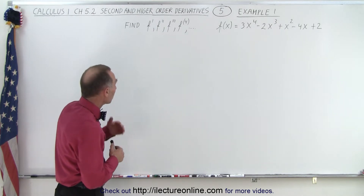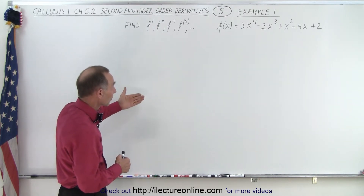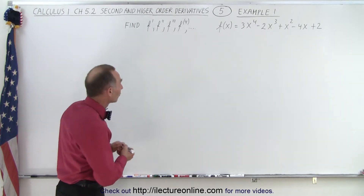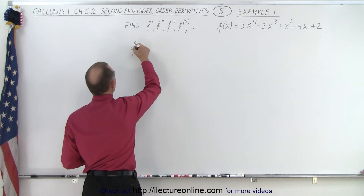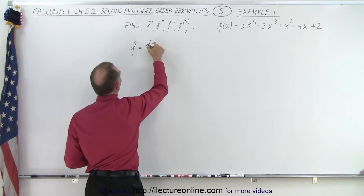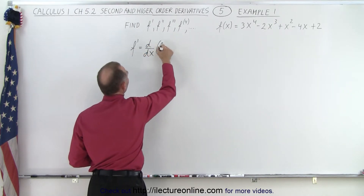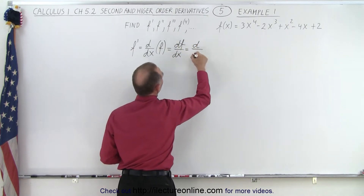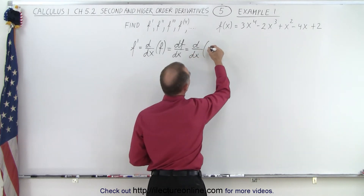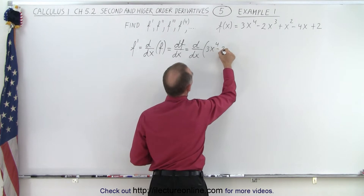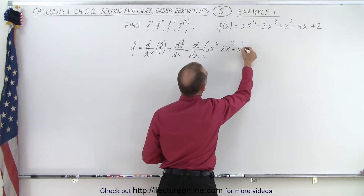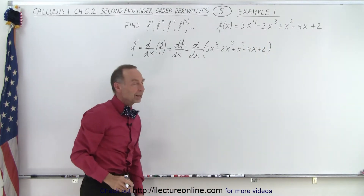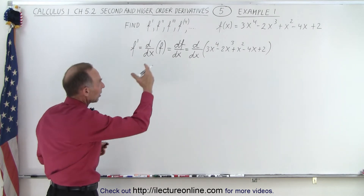We're given a function of x and we want to find the first derivative, the second derivative, the third derivative, the fourth derivative — we just keep going until we end up with zero. The first derivative, f prime, is the same as writing the derivative with respect to x of the function f, which can be written as df/dx, or as d/dx of the function. We can write it as 3x to the fourth minus 2x cubed plus x squared minus 4x plus 2. All those mean the exact same thing — we're simply taking the derivative with respect to x of our function.